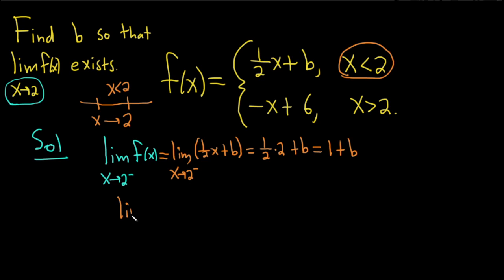So now we're going to take the limit as x approaches 2 from the right of f of x. So this is equal to the limit as x approaches 2 from the right. And we're approaching from the right, so that means x is bigger than 2.